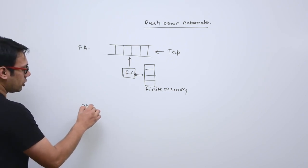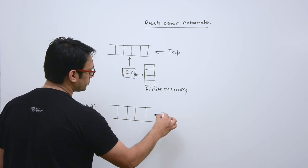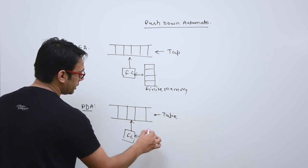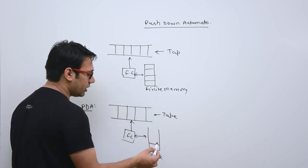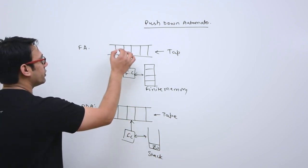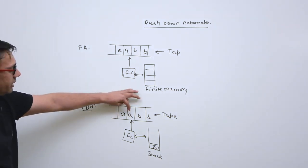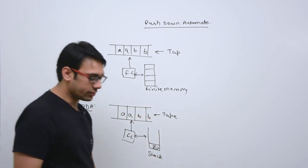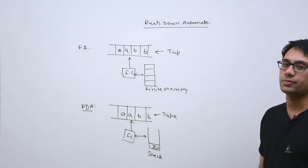In the case of pushdown automata, the structure is like this: we have a tape, a finite control, and here we are going to use a stack. At the bottom of the stack we are going to have a stack alphabet, assumed to be z0. We load our strings onto the tape — for example, a, a, b, b. By reading a string, or reading an alphabet, either we can store that alphabet in the stack or we may not choose to store it, and that decision we can take by looking at the alphabet and the top of the stack.